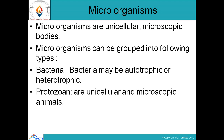Bacteria may be autotrophic or heterotrophic. There are many types of bacteria — some cause diseases in us, and some are very necessary for our body. For example, in our large intestine we need bacteria like Lactobacillus for digestion. If their population is depleted, digestion will not be possible. We eat curd to replenish them. Protozoa are unicellular and microscopic animals.